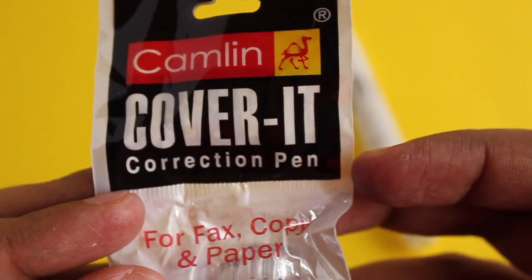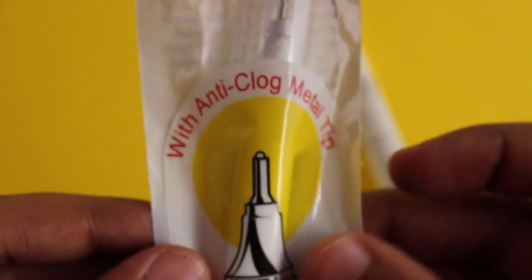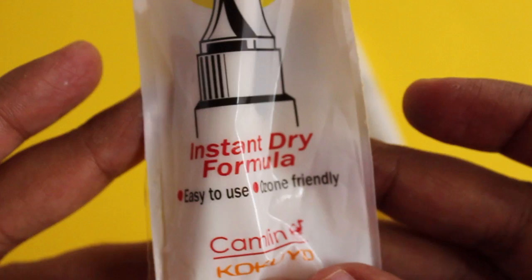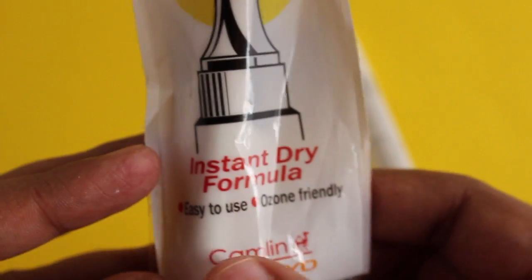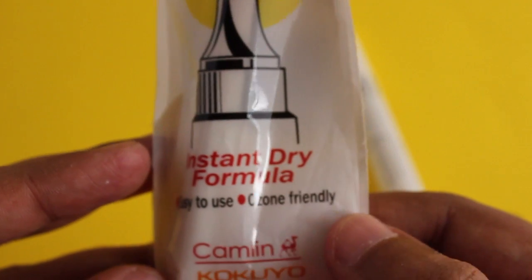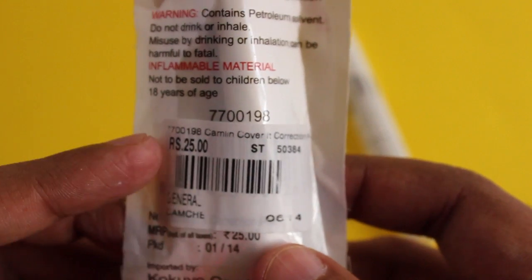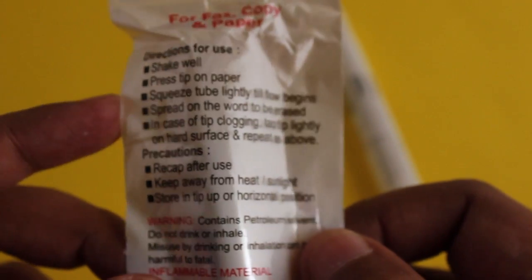This is the cheaper version from Camlin called Correct It. It costs around 20 to 24 rupees or around 30 cents. It has an ozone-friendly feature and instant dry formula.